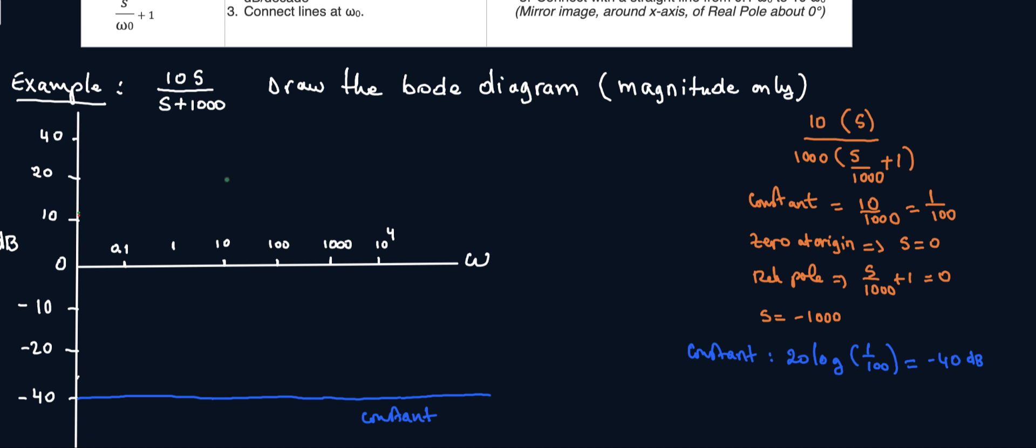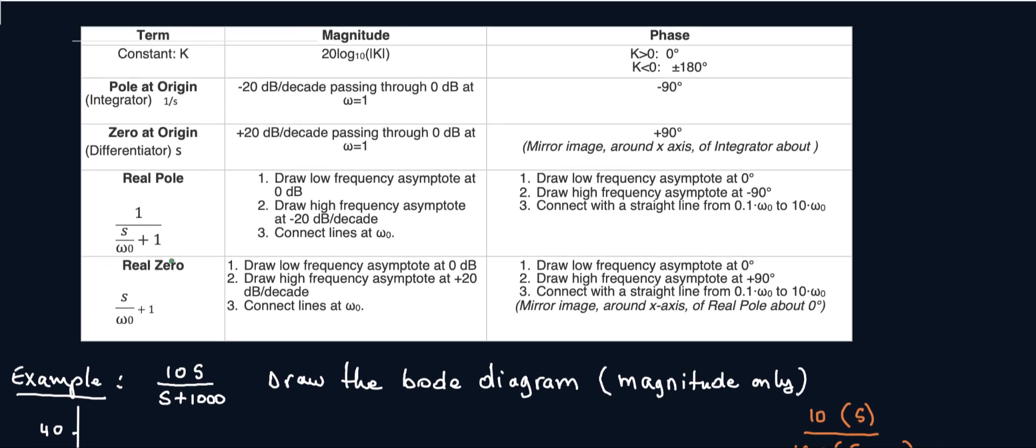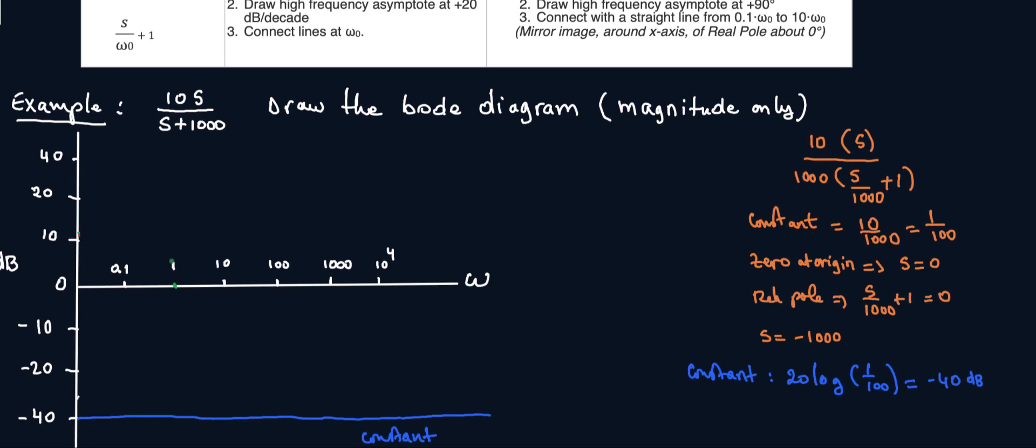So zero at origin is telling me that it's 20 dB per decade passing through zero at omega equals one. So omega equals one. This is zero passing through zero right here, the line omega equals one. And then what's the slope? I have a plus 20 slope. A 20 slope would be around here. Passing through one. So let's just do dot, dot, dot. So it's going to be about like, hold on.